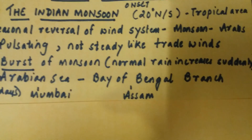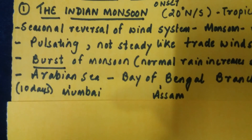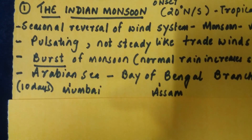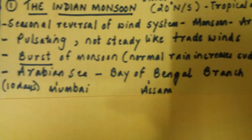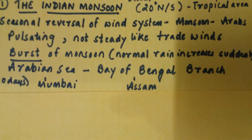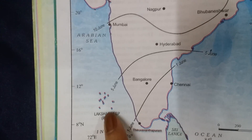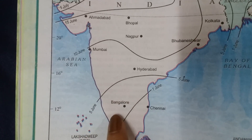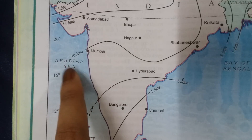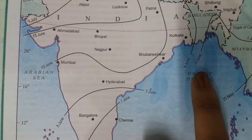Why is it called the burst of monsoon? Because suddenly the normal rain increases drastically — it is almost like a burst. There are two branches: the Arabian Sea branch of the monsoon and the Bay of Bengal branch. We can see it in the map. The monsoon enters from the south and branches off into two: one is the Arabian Sea branch, and the second is the Bay of Bengal branch.